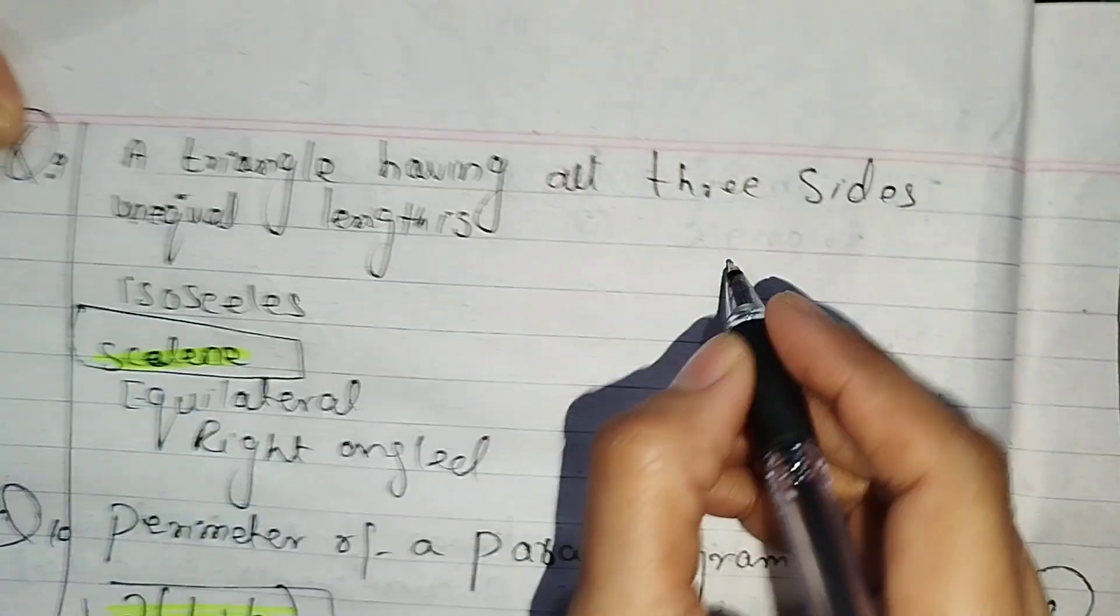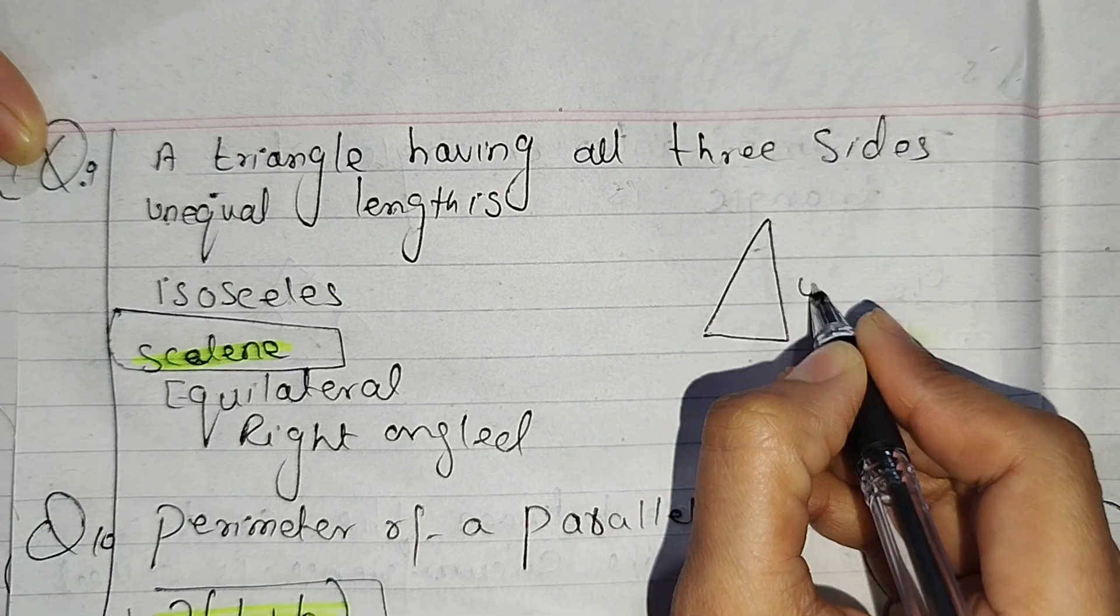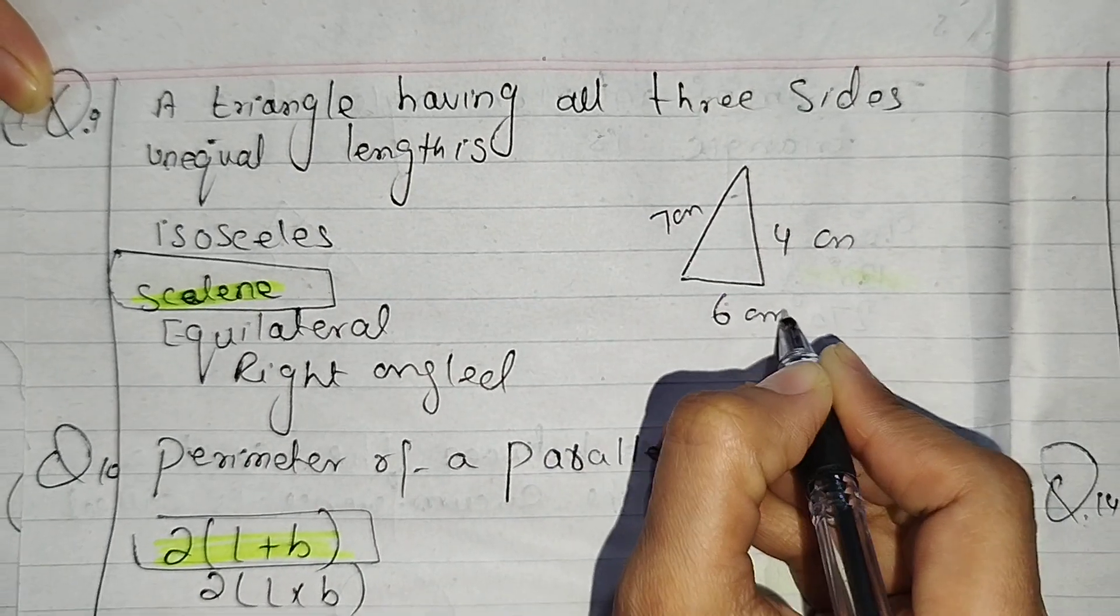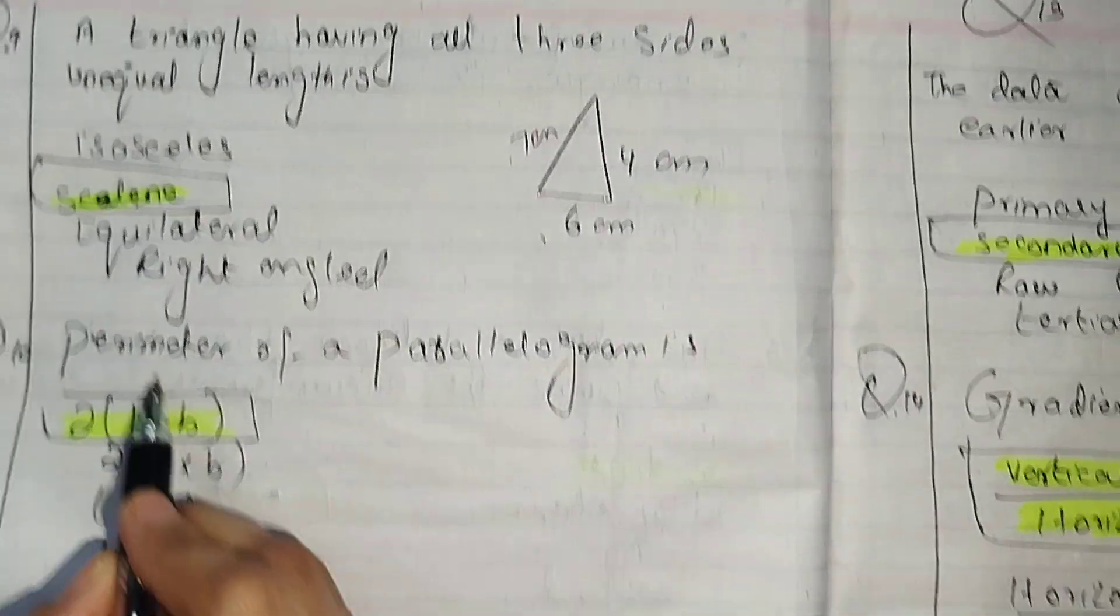Next, triangle having all three sides unequal. We take a triangle with each side unequal. Let's take this 4, this 6, and this 7 cm. Three sides are unequal, so what do we say? Scalene triangle.